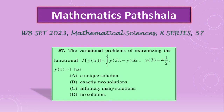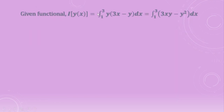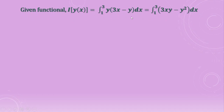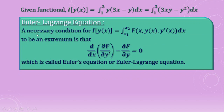To solve this type of problem, we need to know the Euler-Lagrange equation. A necessary condition for I equals integration from x1 to x2 of f(x, y(x), y'(x)) dx to be an extremum is that d/dx of ∂f/∂y' minus ∂f/∂y equals zero. This is called the Euler-Lagrange equation.